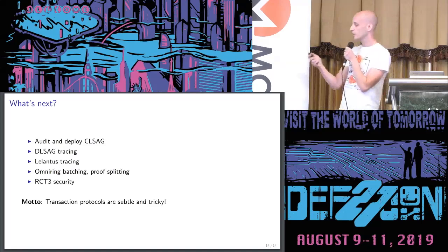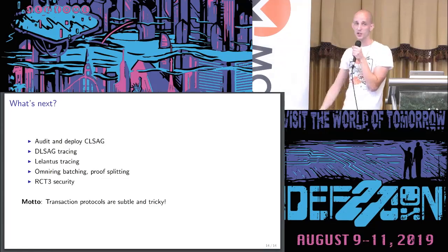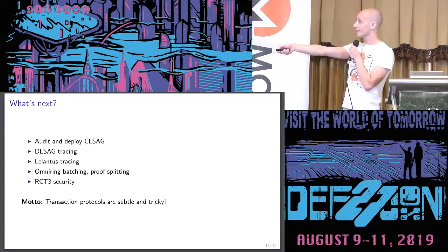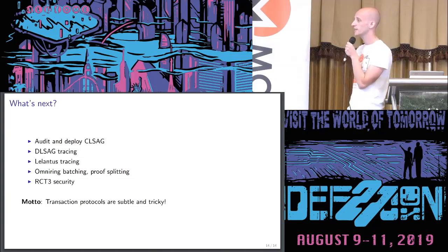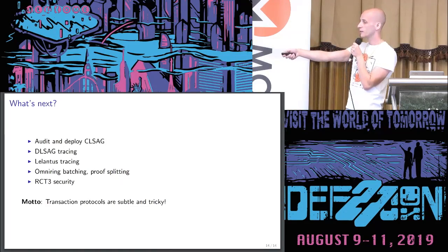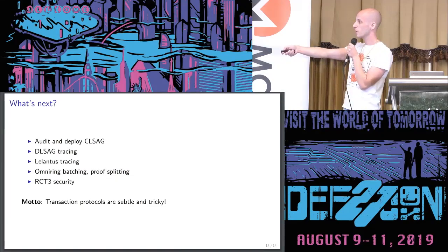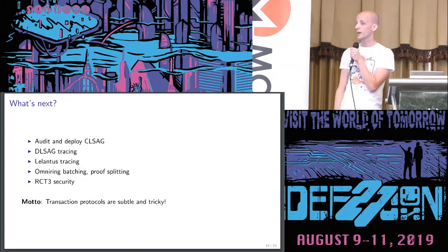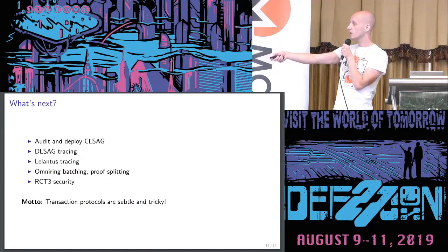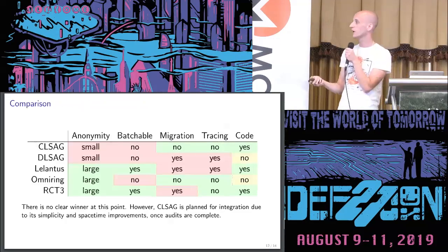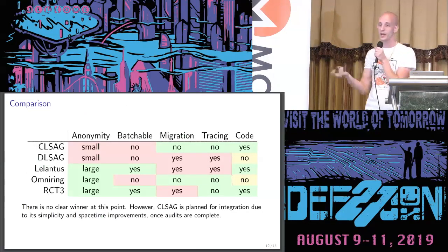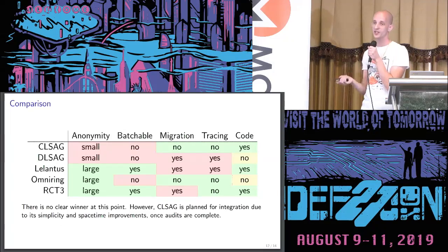So what is actually next? We'd like to audit and deploy the CLSAG signature scheme, which will make transactions smaller and a little bit faster. We'll try to work on the DLSAG and Lelantus tracing issues — DLSAG could enable payment channels, and Lelantus would allow much larger anonymity set sizes. With OmniRing, if we can get batching working or possibly proof splitting, it would potentially be a likely candidate as a transaction protocol. For RCT3, it's a question of making sure the security proofs are solid. The key takeaway: transaction protocols are very subtle and tricky. You don't get everything for free. The goal is to iterate and get better, and these protocols all do that — just in different ways.